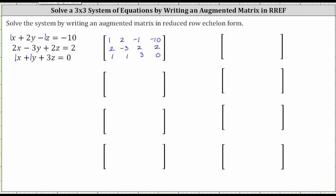Now we'll perform row operations to write the augmented matrix in reduced row echelon form. Let's begin by obtaining a zero in the column-one position of row two as well as row three. Looking at row one and row two, if we multiply row one by negative two and add it to row two, we get a zero since negative two times one plus two is zero. So we'll replace row two with negative two times row one plus row two. Similarly, we'll replace row three with negative two times row three plus row two.